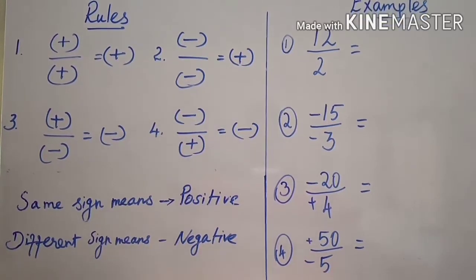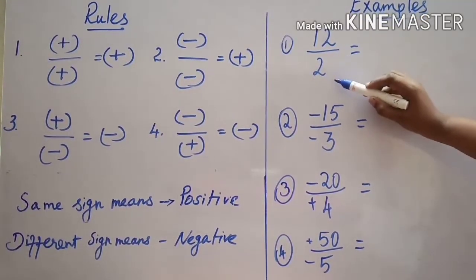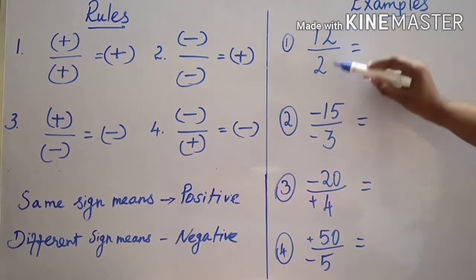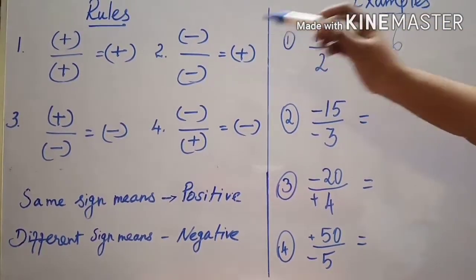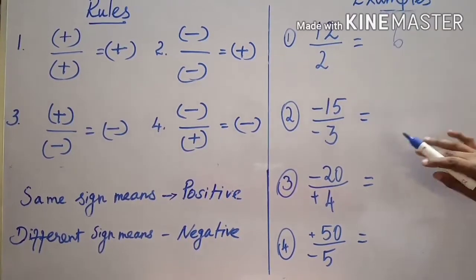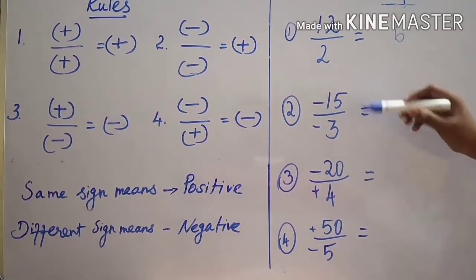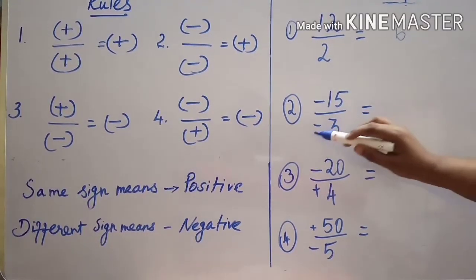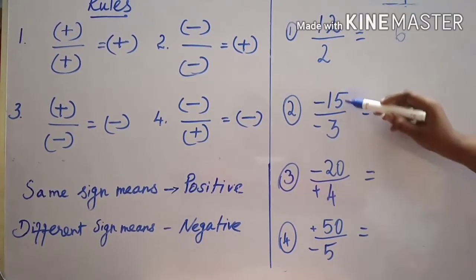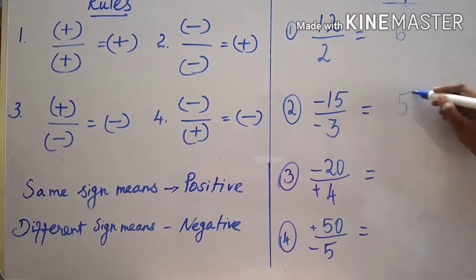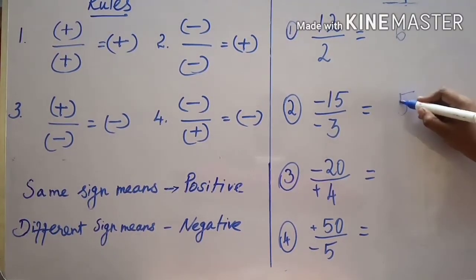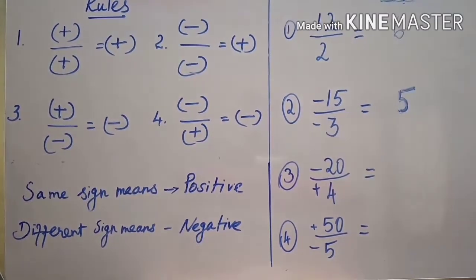Here are some division examples. First: twelve divided by two — both numbers are positive, so twelve divided by two is six, and the answer is positive six. Second sum: minus fifty divided by minus three. Find the value first — fifty divided by three is... wait, fifty divided by ten is five. Both signs are negative, so same sign means the answer is positive: positive five.